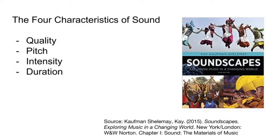We'll start with quality. Quality has to do with the source of the sound — we can discriminate between vocal sources and instruments. When we talk about quality, we are trying to describe the specific elements of a sound that allow us to identify it. For example, how is it possible that you hear a voice and you know it's your friend's voice or your mother's voice? Because you've already identified those voices in your brain — we hear with our ears but everything is processed in our brains.